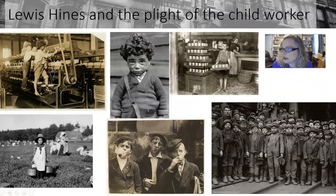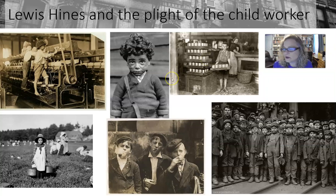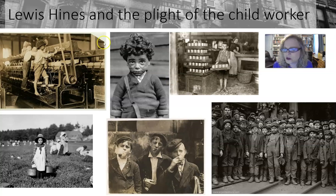Here is an image of the plight of the child worker — some images from Lewis Hine. You can see he tried to really show these children. A lot of them were actually older than what they looked, but their work stunted their growth in particular. Just like Jacob Riis with 'How the Other Half Lives,' Lewis Hine used his photography of the plight of the child worker to really show exactly what was going on with child labor.